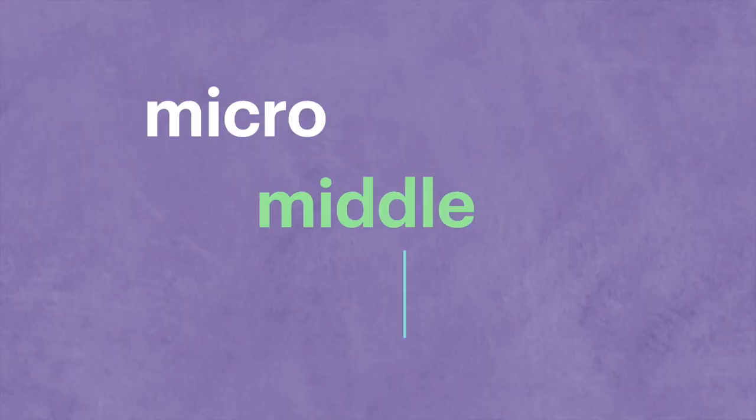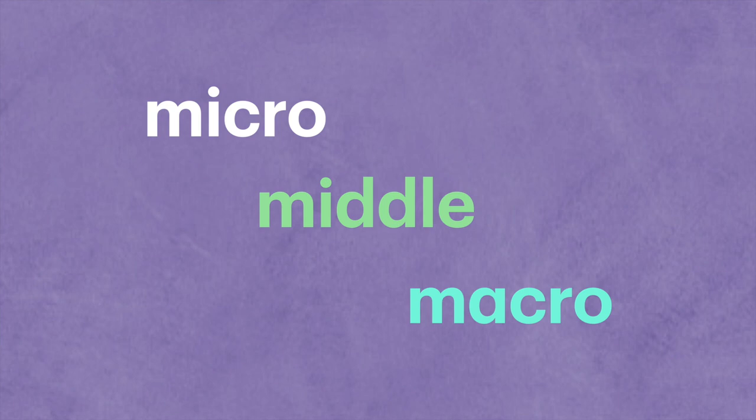Another thing to realize about narratives is that they're complex on the level of micro, middle, and macro levels. Consider, for example, Matthew 13:44, the parable of the hidden treasure, which reads: 'The kingdom of heaven is like a treasure hidden in a field, which a man found and covered up. Then in his joy, he goes and sells all that he has and buys that field.' This parable is a micro narrative — it's one verse long, one sentence in the Greek — yet it conveys an incredible amount of meaning.